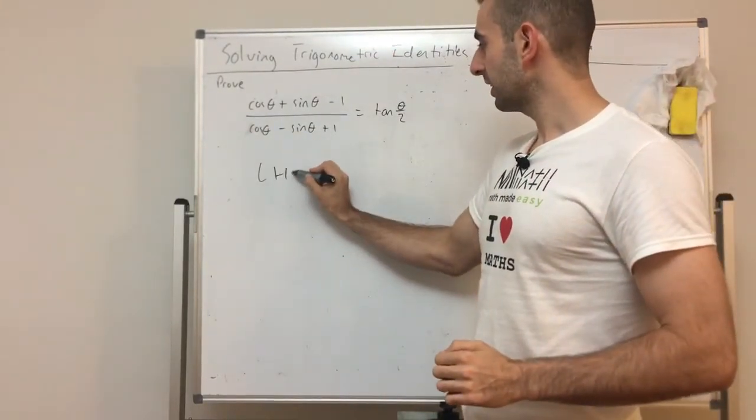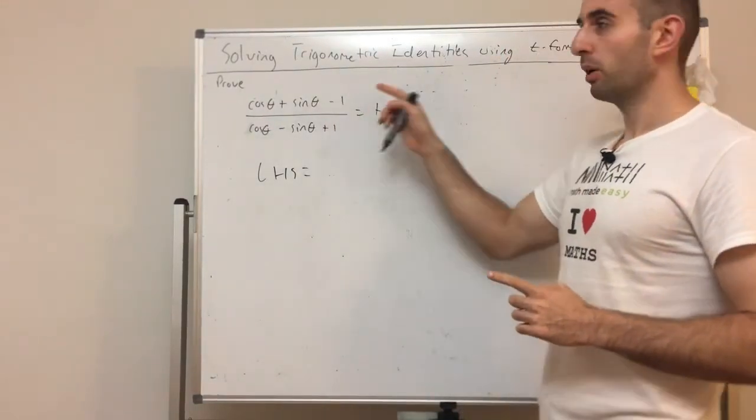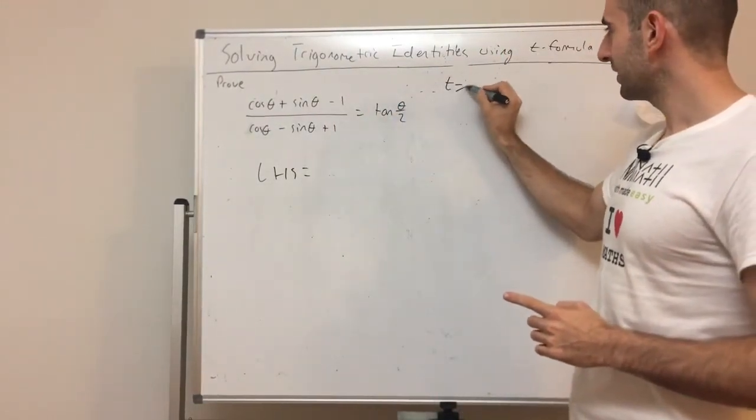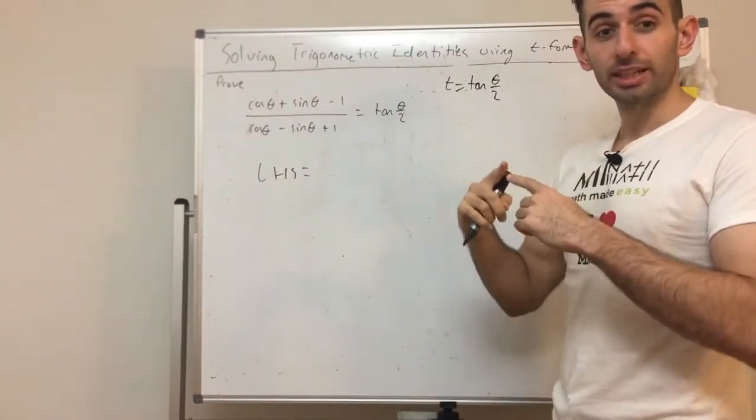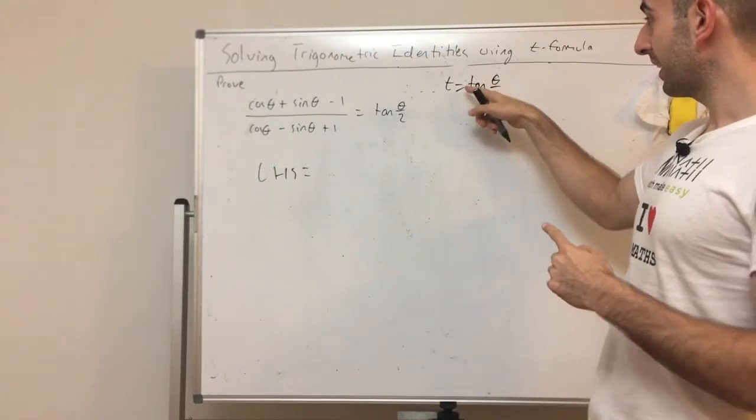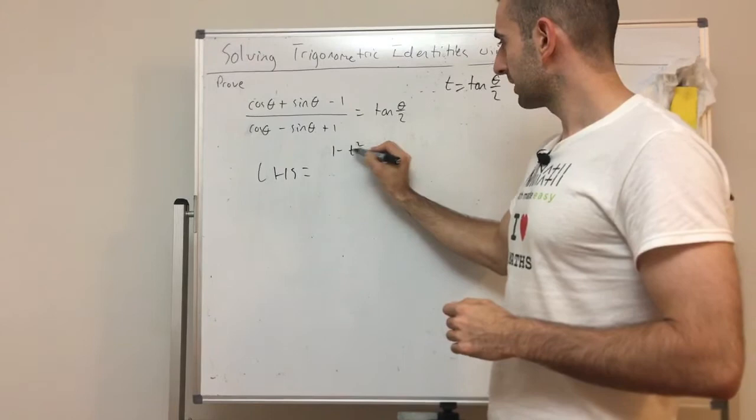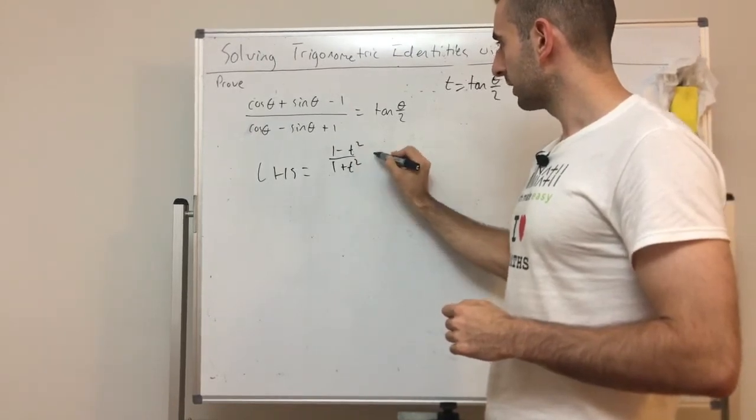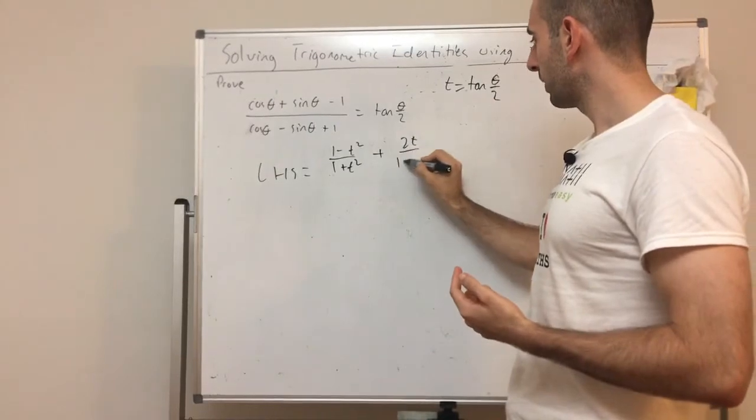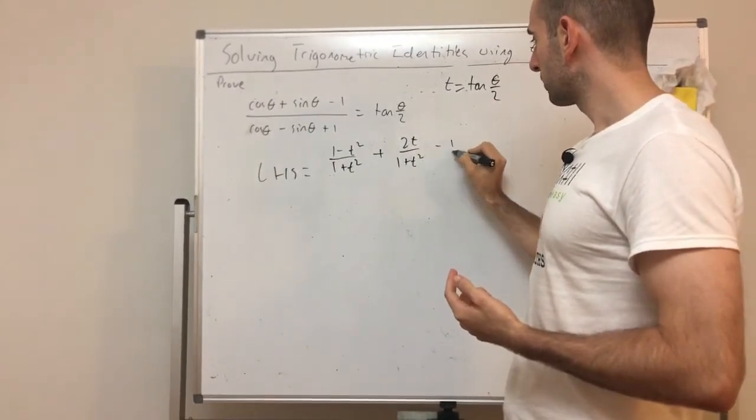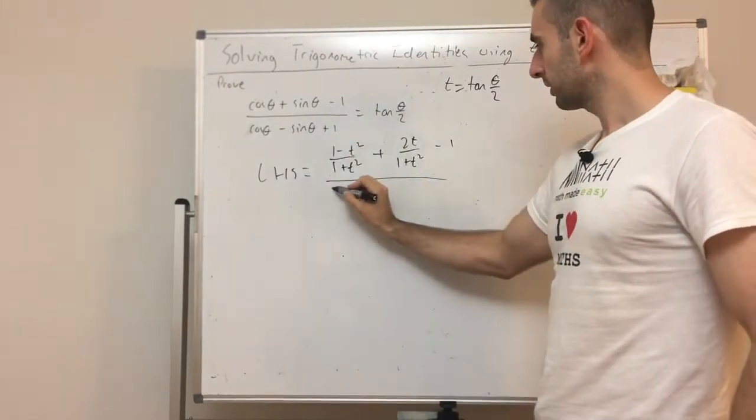And now because we have theta on 2 and theta, our substitution is T equals tan theta on 2. Which means we don't have to write it, we can just sub it in. If we're using T equals tan theta on 2, that means cos theta is 1 minus T squared on 1 plus T squared plus sine theta is 2T on 1 plus T squared minus 1 all over. Pretty much the exact same thing.